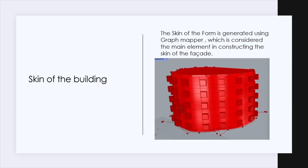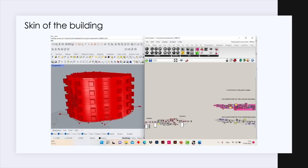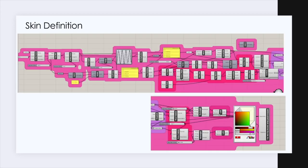The fourth element is the skin. So the skin of the building, the skin of the form, is generated using graph mapper, which is considered the main element in constructing the skin of the facade. So this is the skin definition.